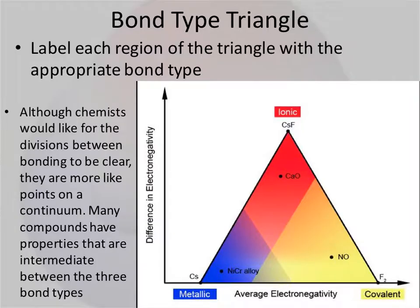Now, if you graphed all this data, you would end up with what scientists call the bond type triangle. So even though scientists would like for the divisions between metallic bonding, ionic bonding, covalent bonding to all be really clear, they're more like points on a continuum. So there are intermediates in between.